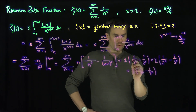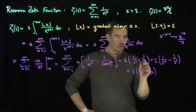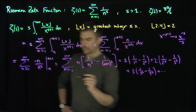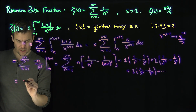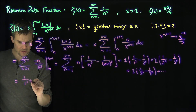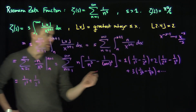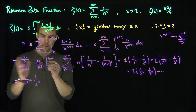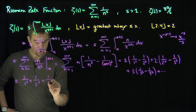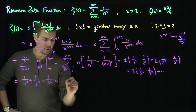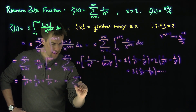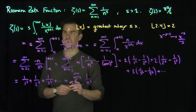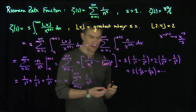Collecting terms: we have 1 over 1 to the s. For the 1 over 2 to the s terms, we have negative 1 and positive 2, giving 1 over 2 to the s. For the 1 over 3 to the s terms, negative 2 and positive 3 give 1 over 3 to the s, and so on. This telescopes to exactly the sum from n equals 1 to infinity of 1 over n to the s, which proves the integral representation for zeta.